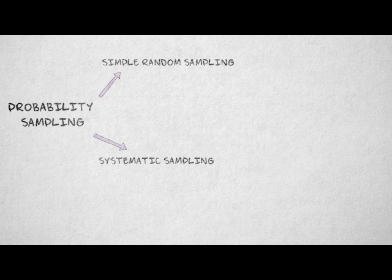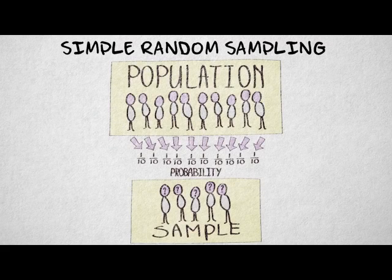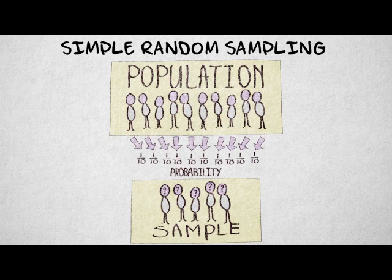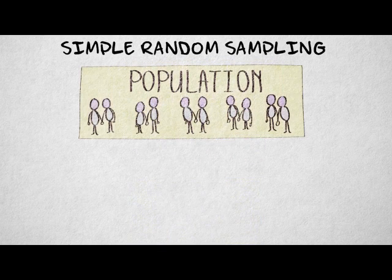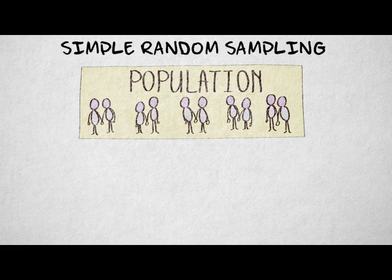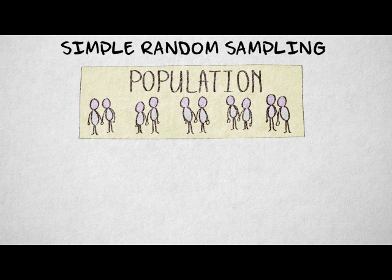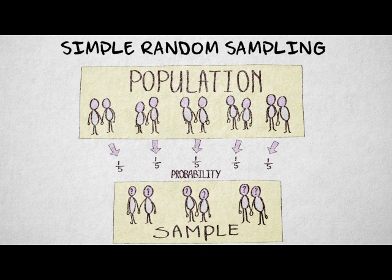The most basic form of probability sampling is simple random sampling. In simple random sampling, each element in the sampling frame has an equal and independent probability of being included in the sample. Independent means the selection of any single element does not depend on another element being selected first. In other words, every possible combination of elements is equally likely to be sampled.